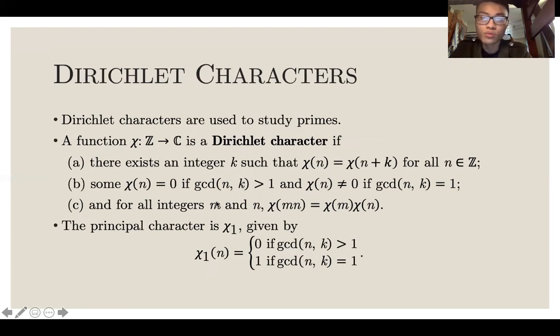Dirichlet characters are also very important to study primes. We denote them by chi, this x symbol, and it goes from the integers to the complex numbers. There exists an integer k such that chi of n is chi of n plus k. That just means that it repeats with a period of k. Chi of n is 0 if the greatest common divisor is greater than 1, and chi of n is not equal to 0 if the greatest common divisor is 1. And finally, for all integers m and n, chi is completely multiplicative. The principal character is chi of 1.